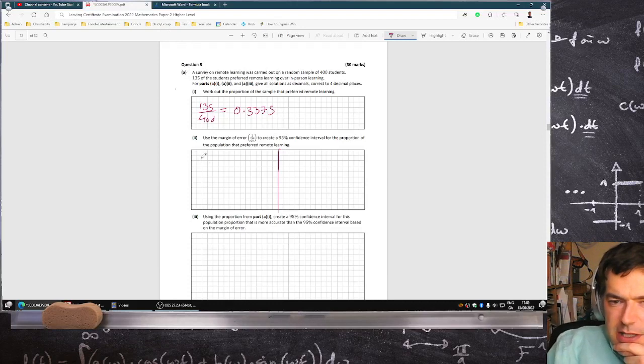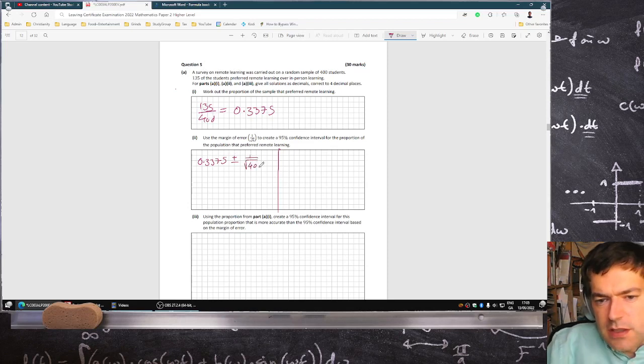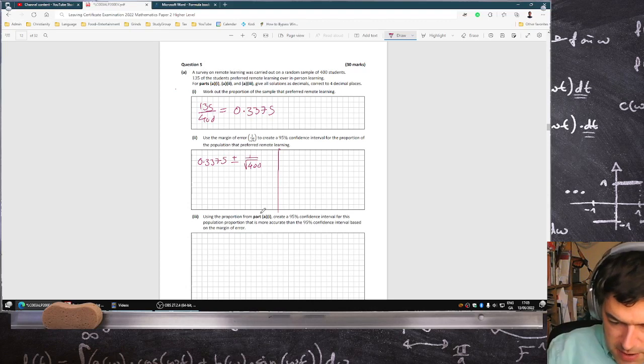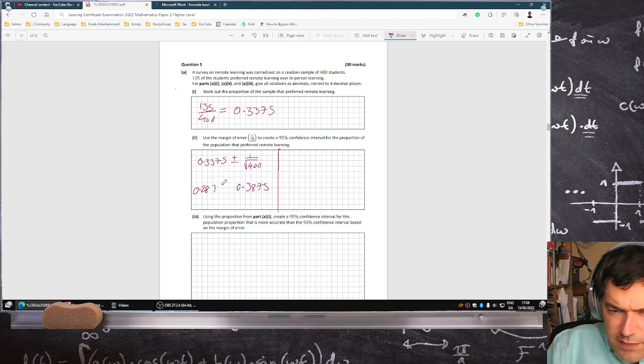So it's going to be 0.3375 plus or minus 1 over root 400. So at the upper end, the positive end, that's 0.3875, and then at the lower end, that's 0.2875.